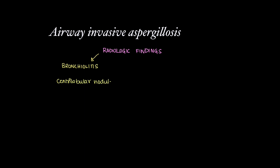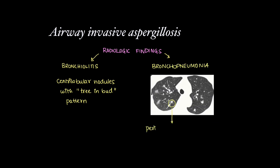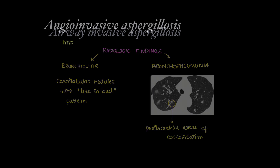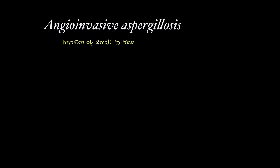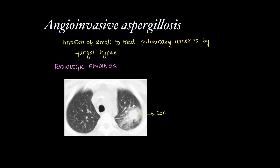In airway invasive aspergillosis, we can see bronchiolitis appearing as centrilobular nodules with a tree-in-bud pattern of spread, and bronchopneumonia appearing on CT as peribronchial patchy areas of consolidation. In angio-invasive aspergillosis, invasion of small to medium pulmonary arteries by fungal hyphae appears on imaging as consolidation with surrounding ground glass opacities, classically known as the halo sign.